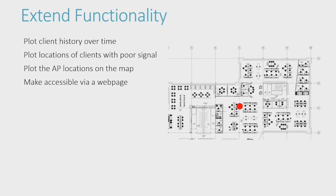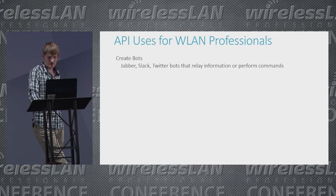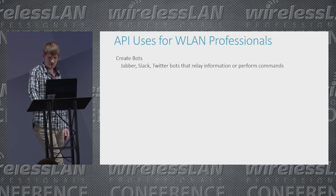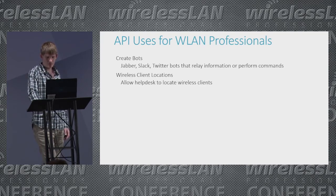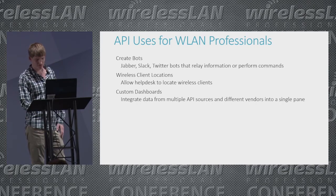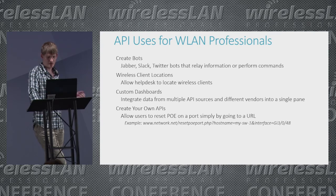Now that I've shown you how to draw the client location on the map, I would challenge you to take that script and extend its functionality to help yourself learn. Most of the automation and scripting I've learned through trial and error, and these are just some ideas of features you could add to the base script. In this presentation, I've shown you one API and one possible task you can do with it, but there are many more APIs and endless possibilities. You could create a Jabber bot that sends you an IM when a controller goes down. You could build a tool for your help desk to locate laptops and wireless devices. You can create the mythical single pane of glass that pulls in data from multiple vendor systems and displays them on a single web page. You can also create your own REST APIs — one example is creating an API that is simply a URL users go to and allows them to reset PoE on a port, where in the background a script SSHs to the network device and removes and re-adds the PoE commands.